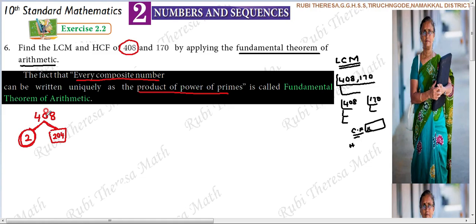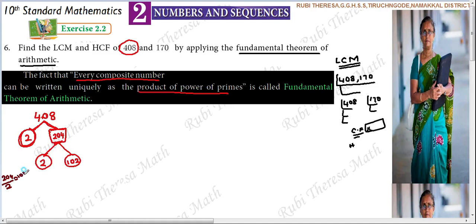The number is 408. To find the other factor, you divide this multiple by the given factor. 204 divided by 2. To find the other factor — what should you do? Divide this multiple by the given factor.